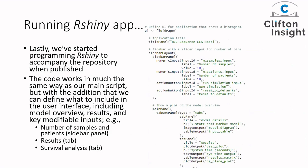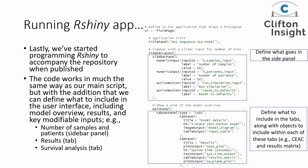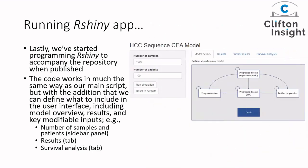We're also looking at using R Shiny, which we hope will accompany the repository when it's published. It works the same way as the main script, with the addition that we can play around with what the user interface will look like — including a left panel for number of samples and patients, simulations, and an option to reset to default settings. But again, this is a work in progress.